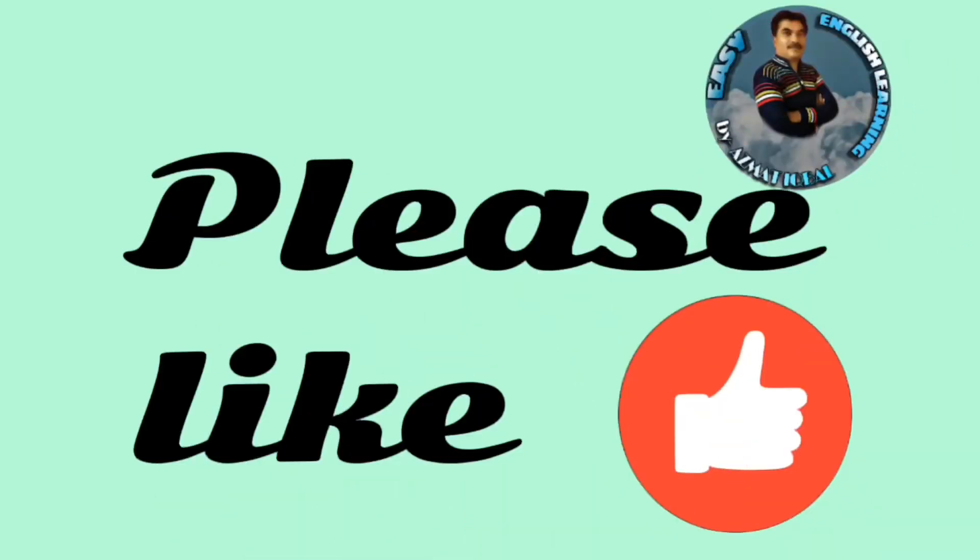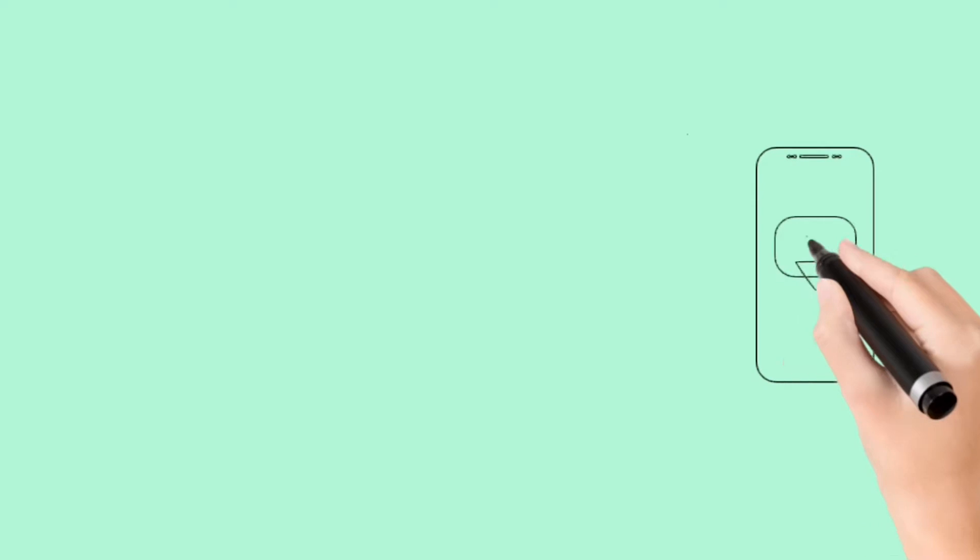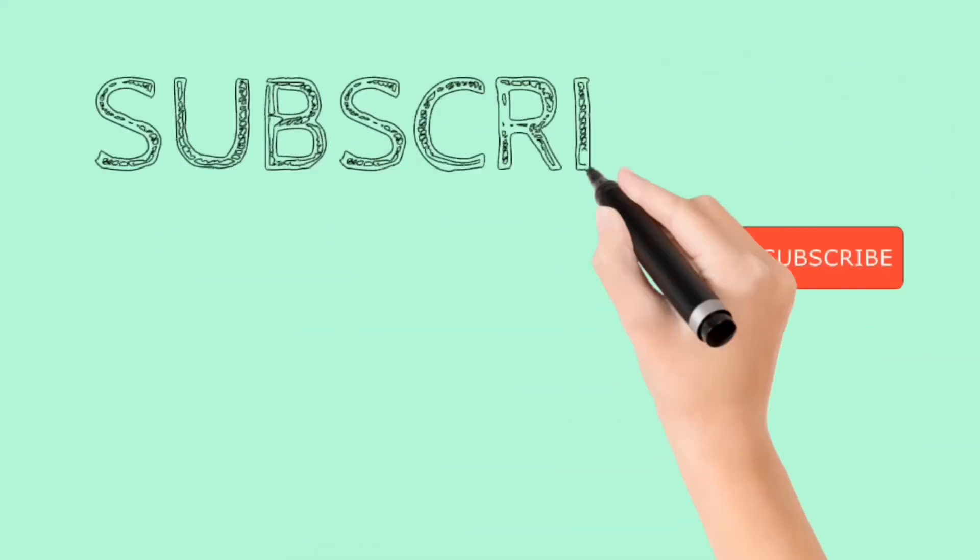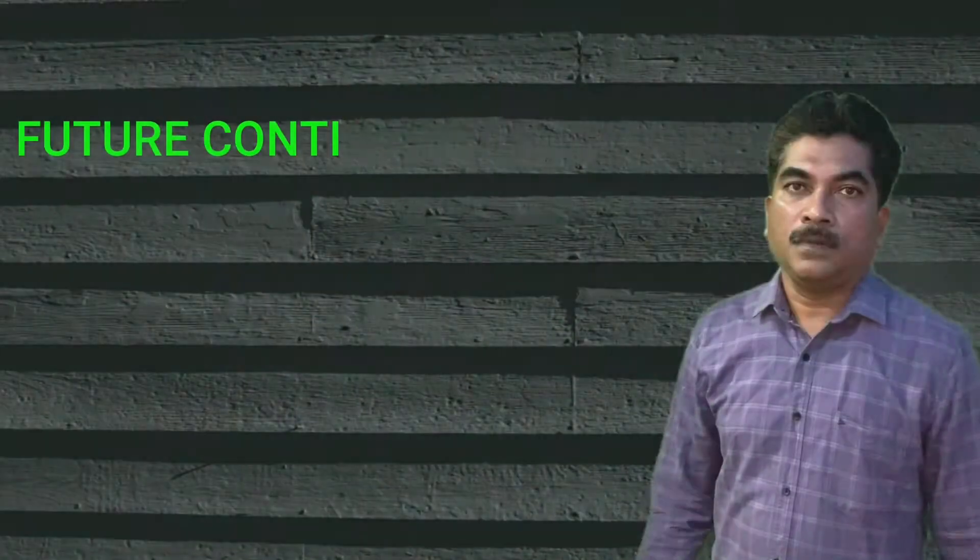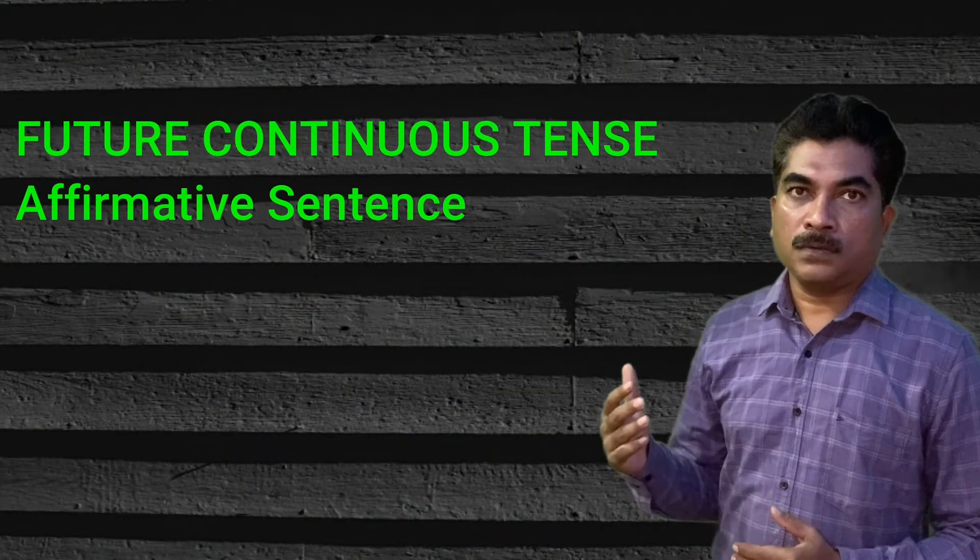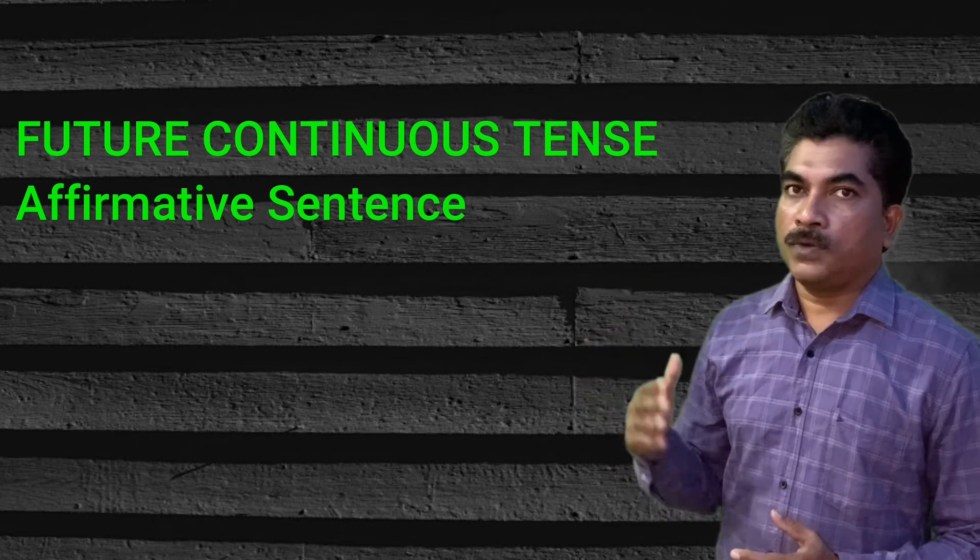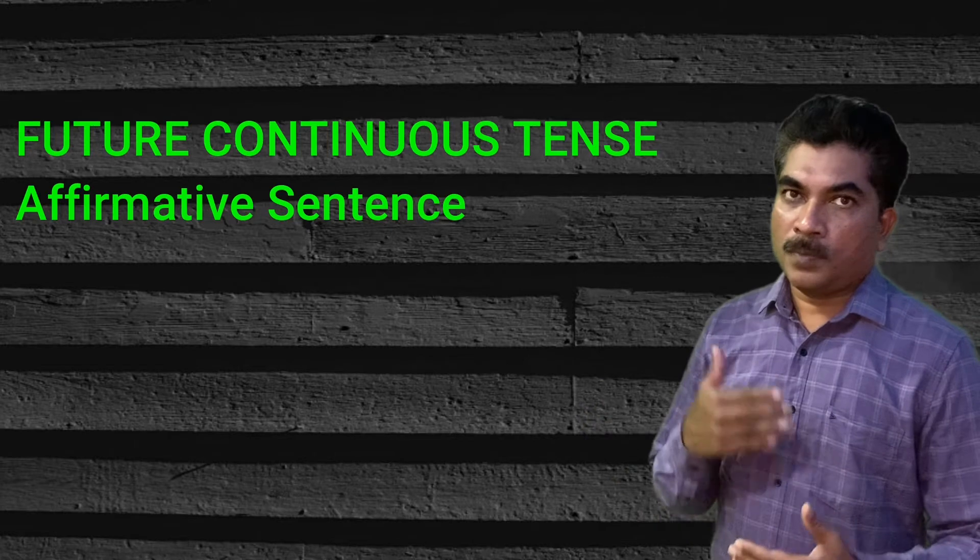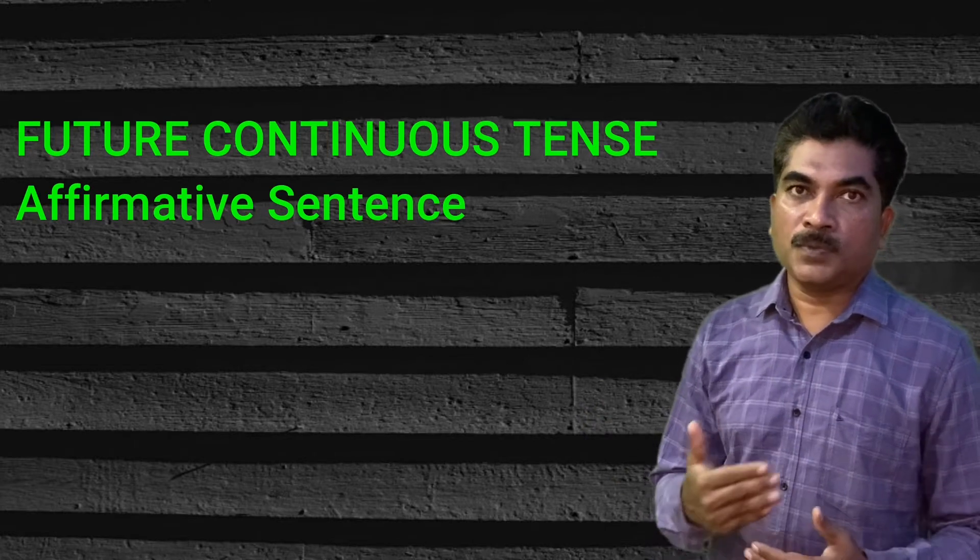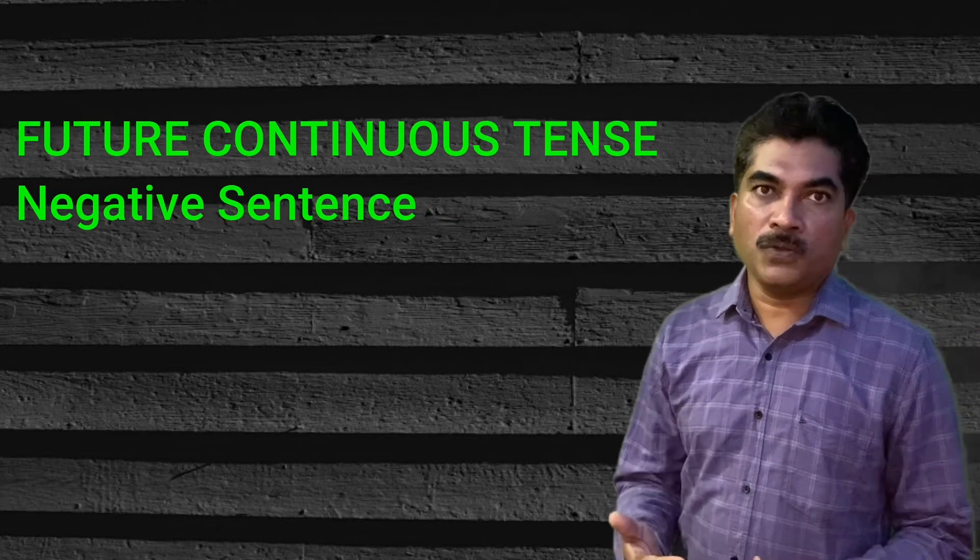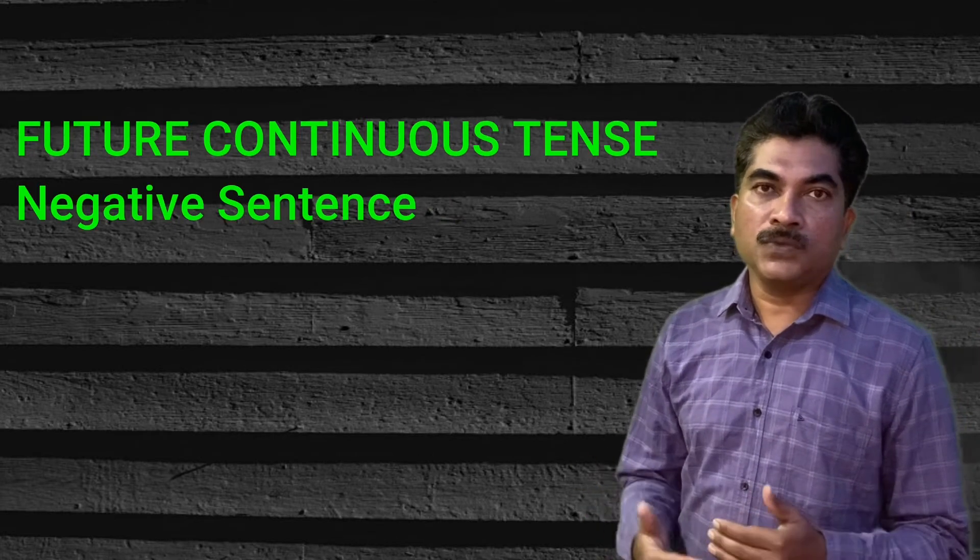Please like, share the video and subscribe to the channel. Dear students, in the last session we learned about future continuous affirmative sentences. The next sentence type is negative. Negative sentences use 'not', and 'not' is used with the helping verb.